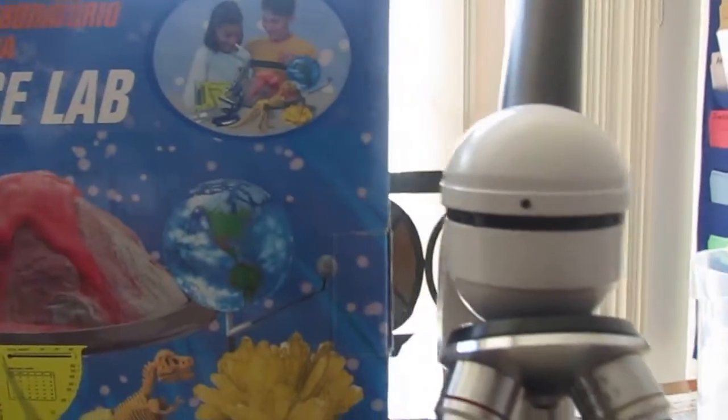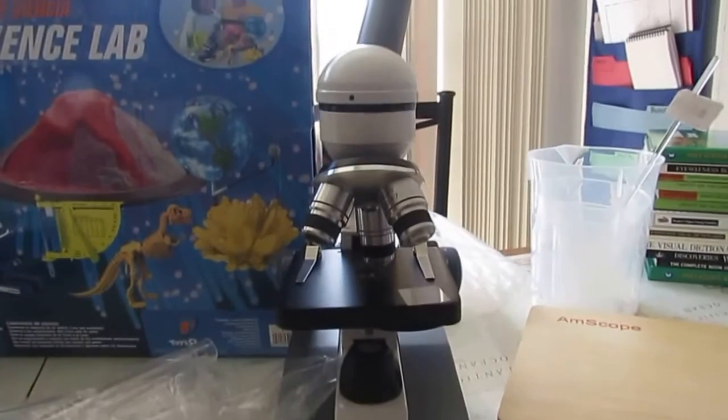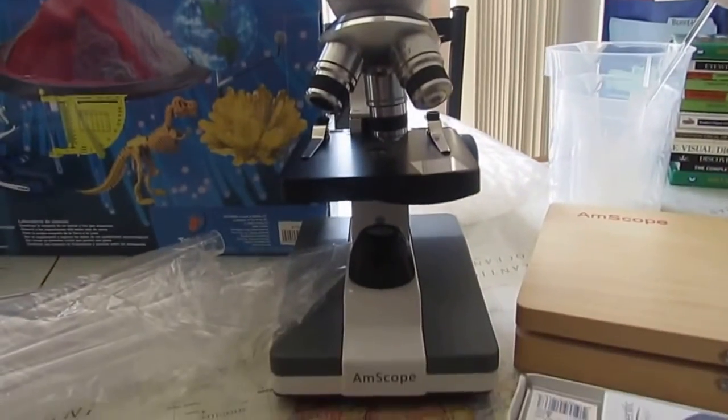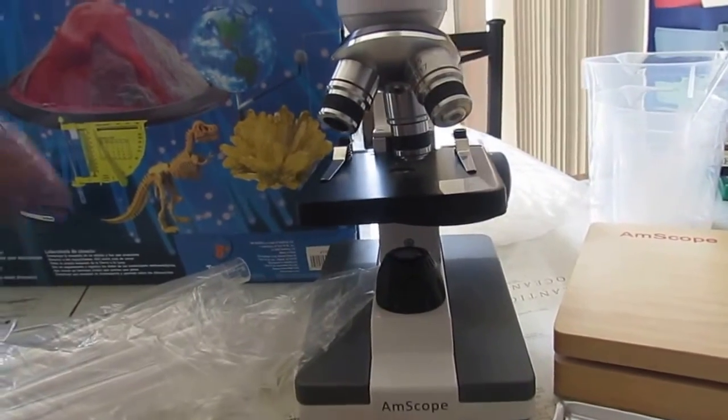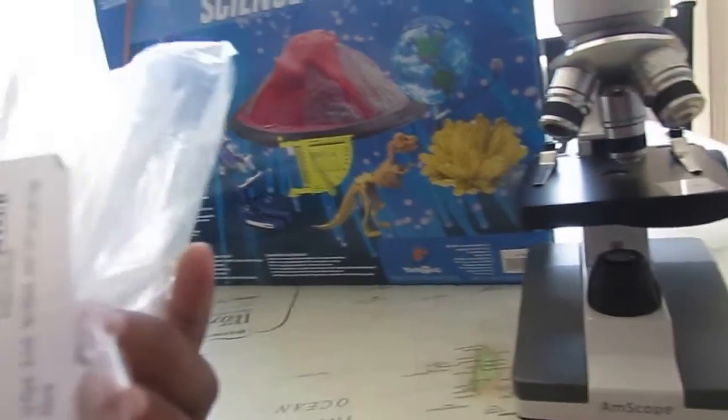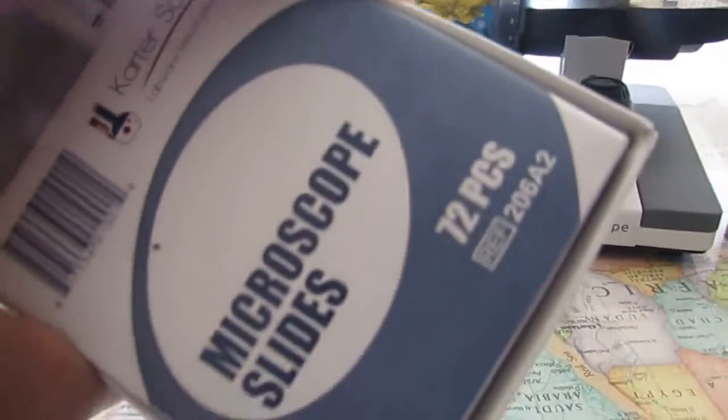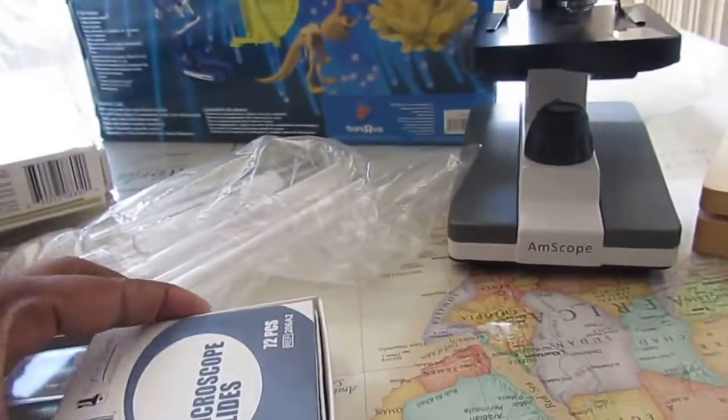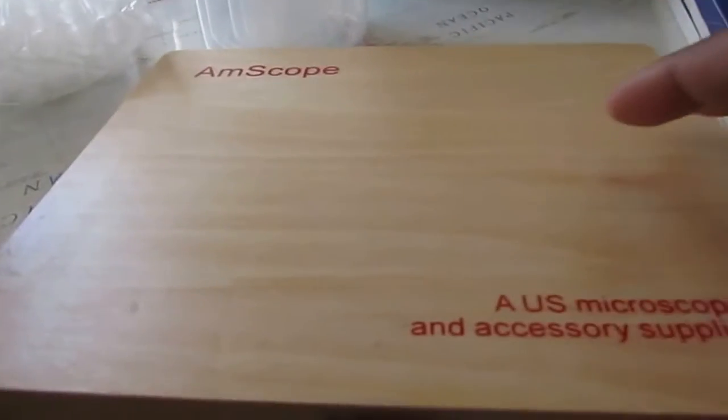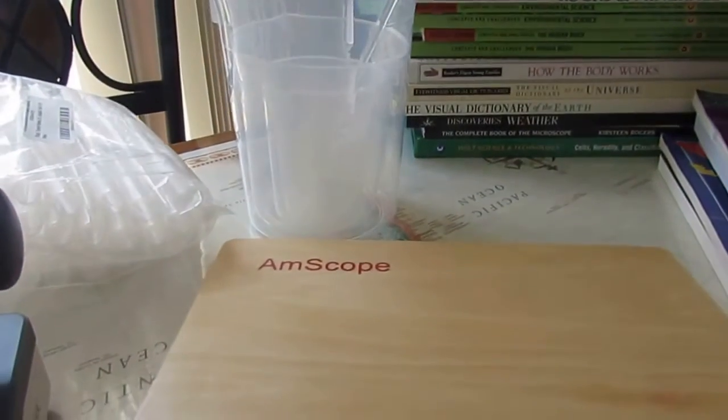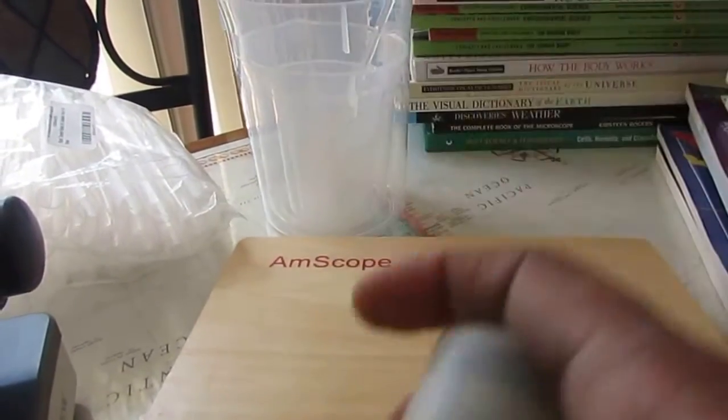Now going to my microscope. I got this microscope from Amazon. And I really like it. It also hooks up to our computer. Then I have a bag full of tubes with caps. We have microscope slides. And then we have the set of slides that's already prepared with the list on the inside.